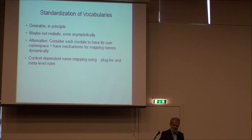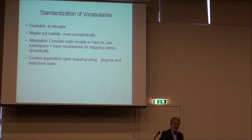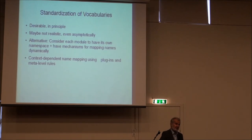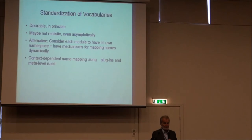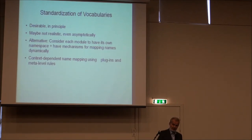A brief comment on another topic: standardization of vocabularies. In the uniform view of a large knowledge base, it is clearly desirable that each concept in the world — representing an object, person, or other phenomenon — should be represented by exactly one name. The existence of different identifiers for the same thing would be seen as an anomaly to be eliminated. However, the problem is that this may not be realistic, because reality is so complicated and the ways of looking at it are so complicated that it may be an overwhelming task.